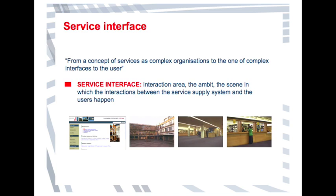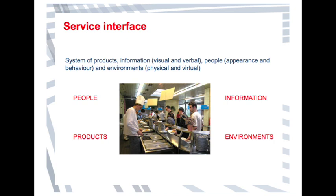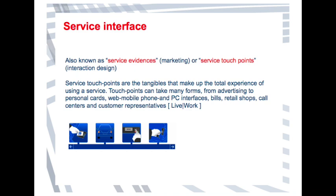Some services are more dominated by physical spaces, some others are more based on human relations. But service interfaces are a system made of different elements: physical products we interact with, information that can be visual like signposting and visual signs to guide people in complex environments, or verbal communication with service staff. There are also people — their appearance, how they are dressed, how they behave, their practices, their expertise — and the environment, which can be both physical and virtual. The coordination of all these elements is what makes the quality of a service provision.